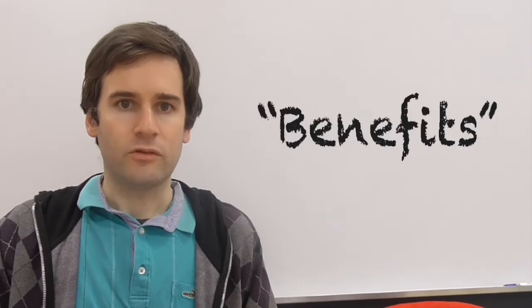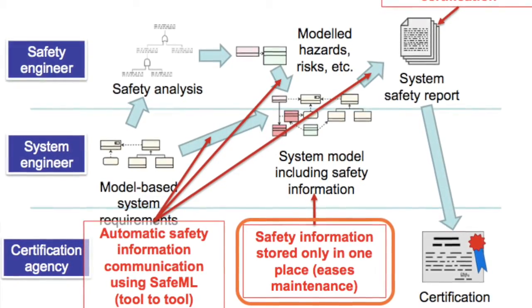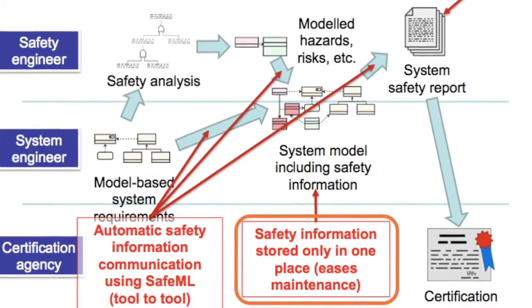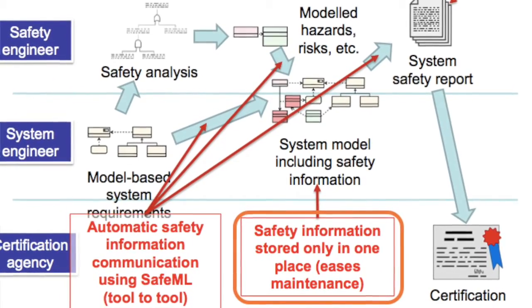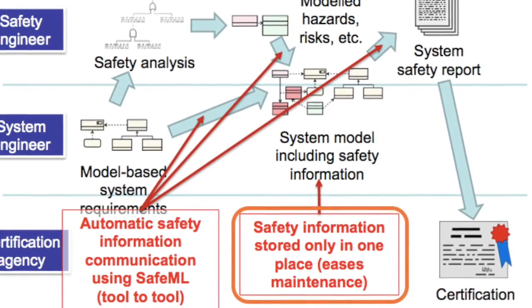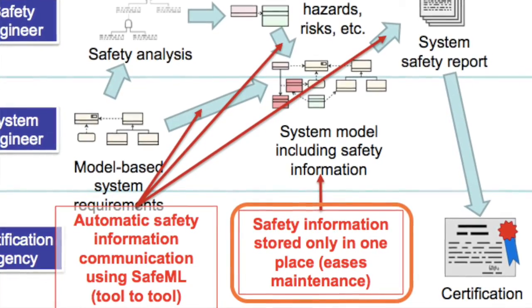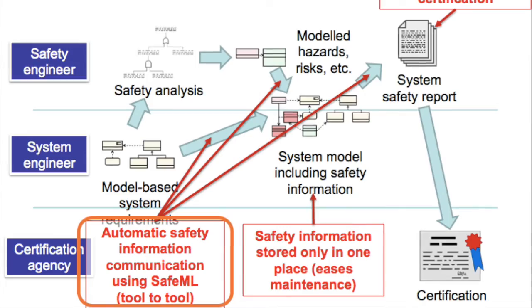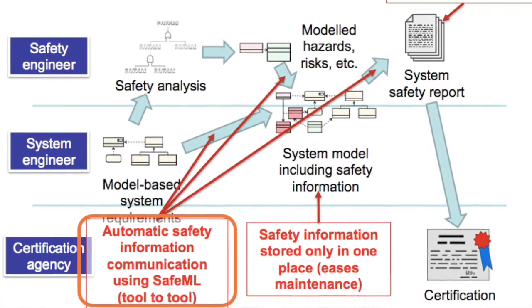This has several benefits. First of all, the safety information is only stored in one place. This means that when it needs to be updated, we only need to update it in one place. And because it's model-based, the computer can then automatically update any other products produced from that model, such as reports. We also gain the benefit of automated computer assistance — because we have now made the computer understand the format of our information, we can use it to perform analyses.